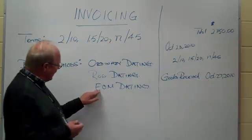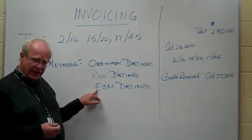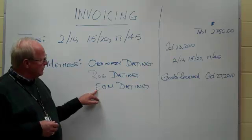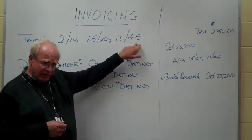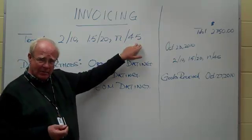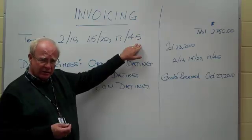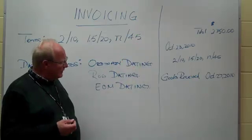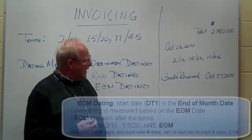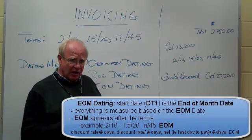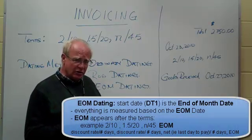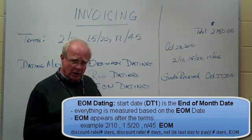The last type of dating is end of month dating. You would know it was end of month dating because after the terms it would say EOM, standing for end of month. In that case, October has 31 days, and we would put October the 31st, 2010 as date one in the calculator.